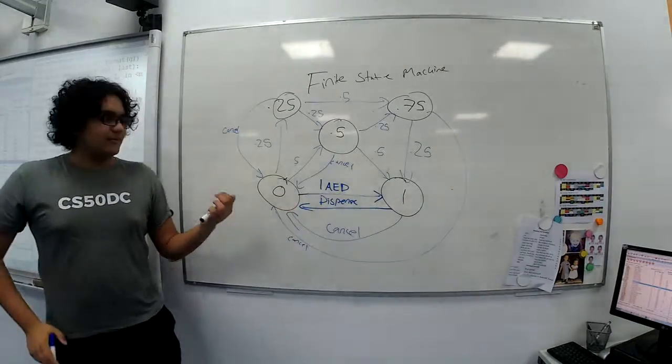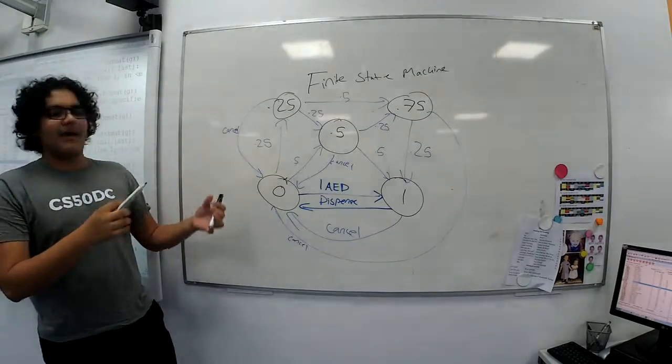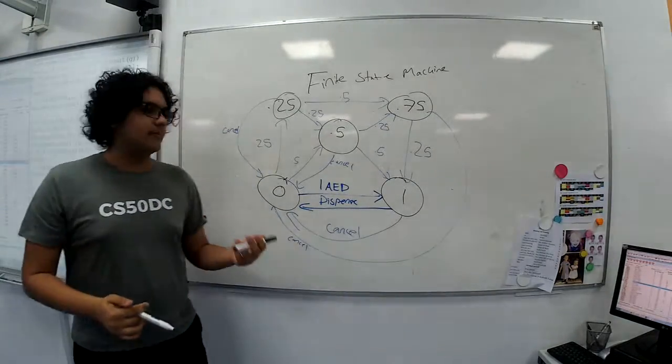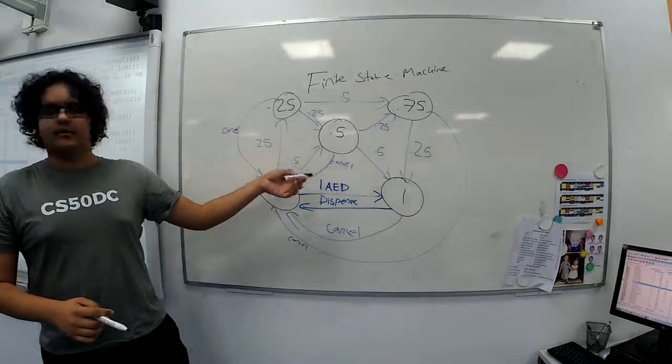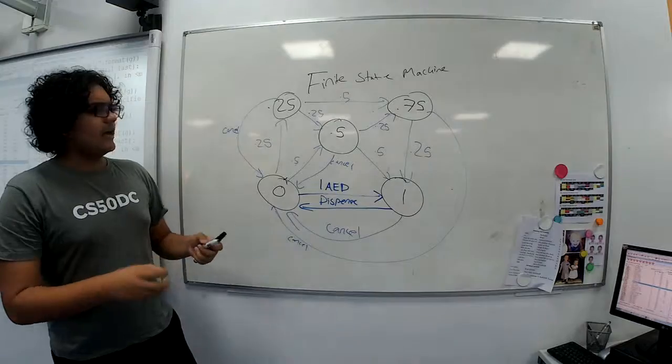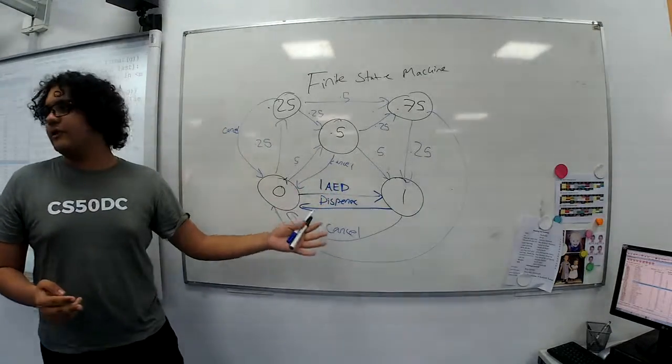So now you can see why it's useful to draw these kinds of diagrams, because it can be hard to reason about what will happen when a certain operation is done on a machine or when a certain input is given. And these are basically inputs, the transition lines. They're basically, you could think of it as inputs to a program or inputs, literally inputs of coins to a machine.